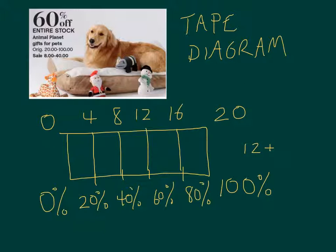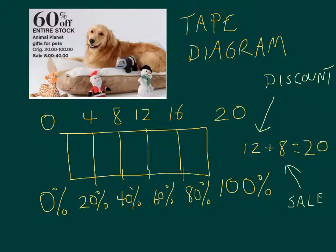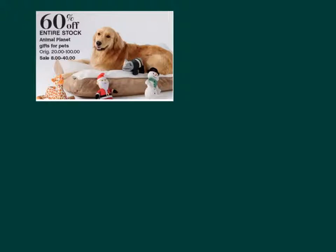So remember, that's where we got those two numbers before: we got twelve plus eight equals twenty. And if we're thinking about what those are, that twelve is the discount and that eight is the sale price. We're going to do that again, but now we're going to use a fraction method.